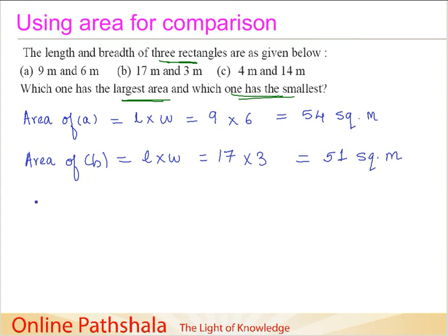And then area of rectangle C is again given by length into width, and we have 14 meters multiplied by 4, which is 56 square meters. Now we have to find out which one has the largest area. If we just need to compare 54, 51, and 56, we see that 56 is the biggest number. We should also see whether all the squares are same—all the 3 are being measured in meters squared. So 56 is the biggest.